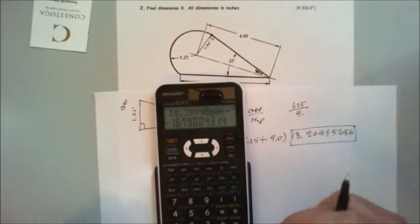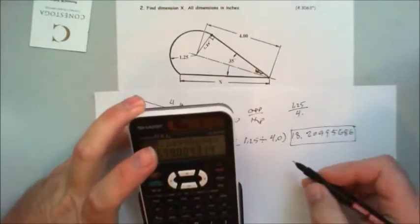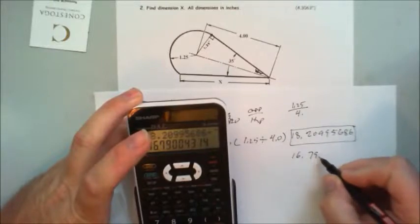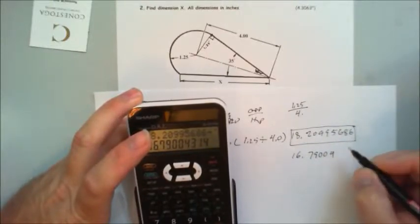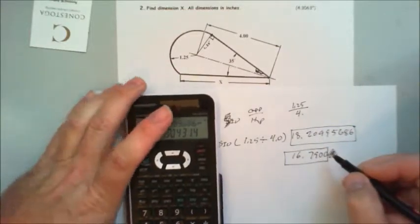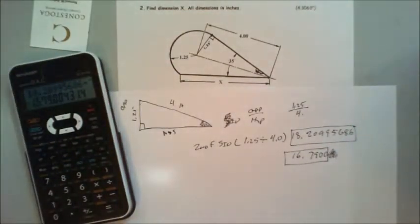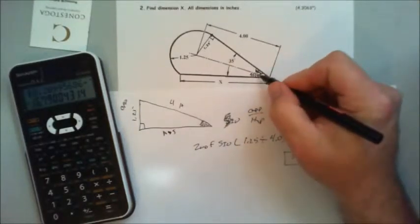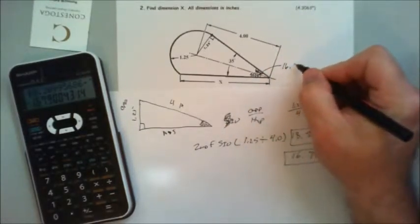Get a negative number. I'll turn that into a positive though. We'll go 16.79004. We'll just scratch that and we'll just use this number here. So now we have this angle here, which is 16.79.